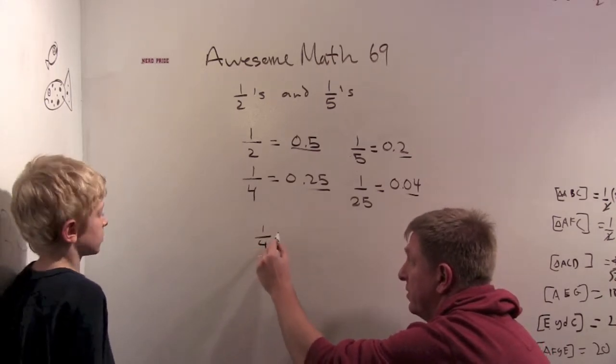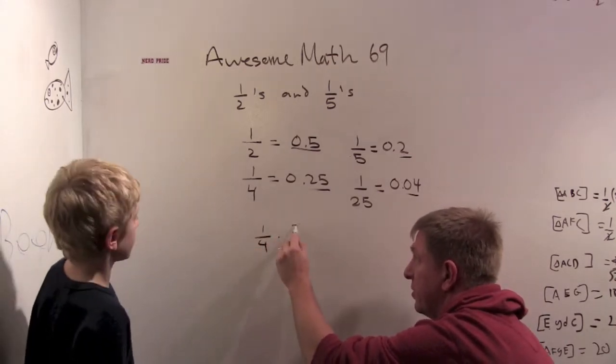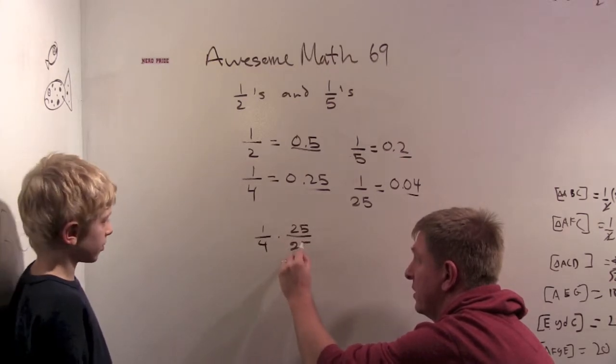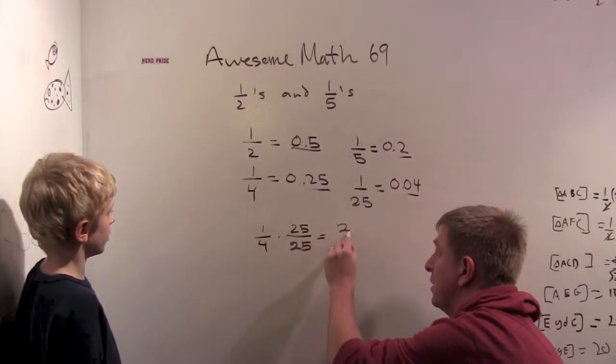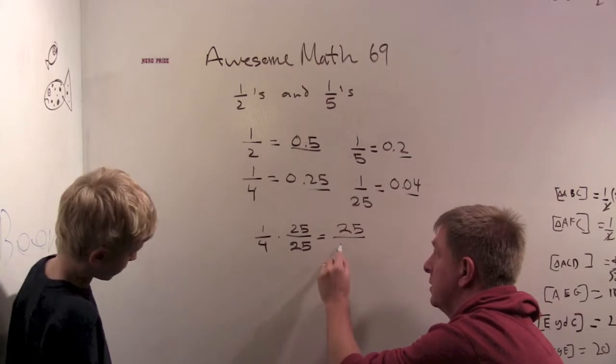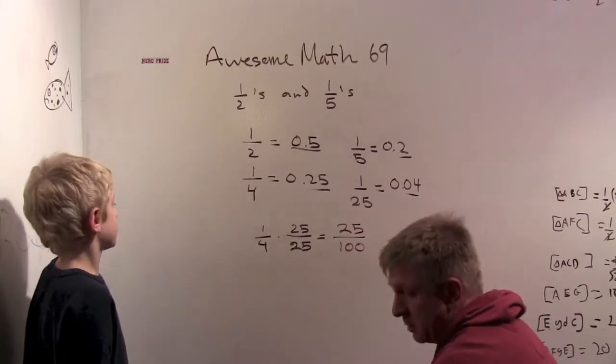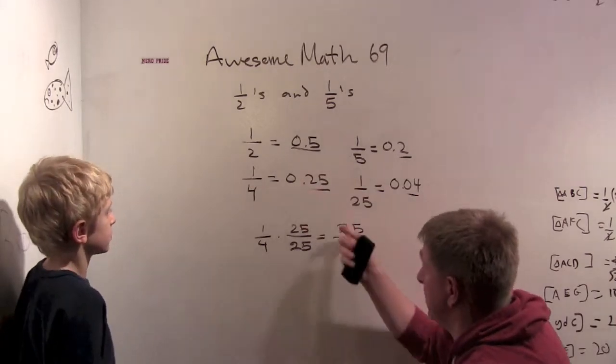One fourth, for example, if I multiply by twenty-five over twenty-five, you get twenty-five over a hundred, which is 0.25.